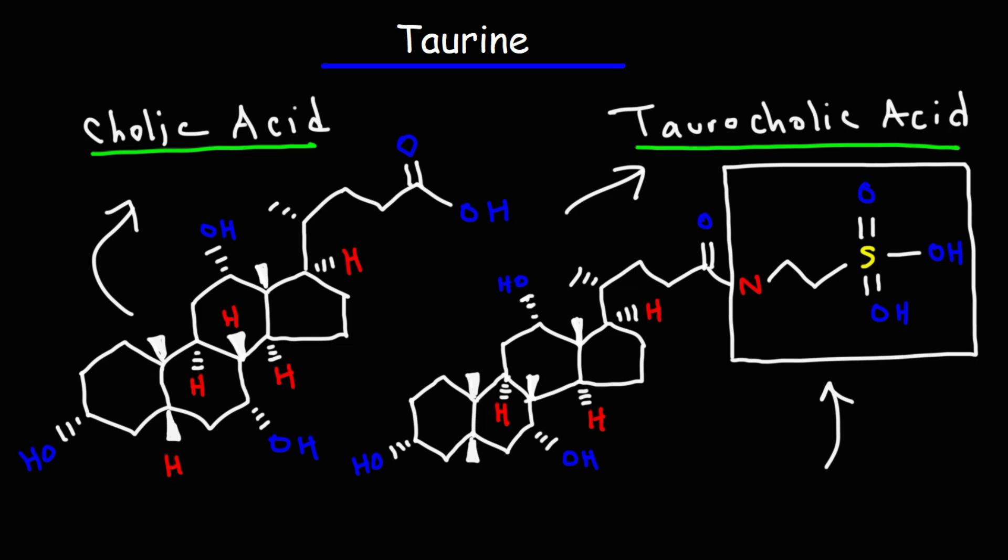There are other bile acids that are found in the body such as chenodeoxycholic acid and other ones too, but taurine does play a role particularly in taurocholic acid and taurochenodeoxycholic acid as well. But it's basically very similar to this structure. The only difference in taurochenodeoxycholic acid is that it doesn't have this hydroxyl group here. Everything else is pretty much the same.